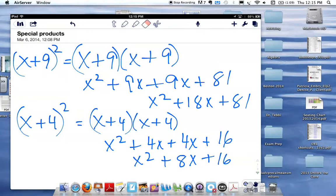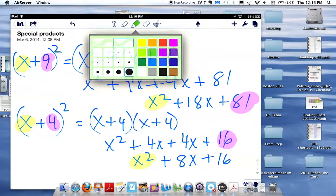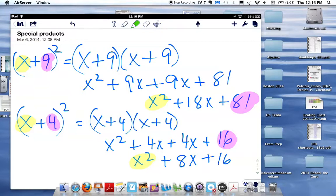We could go on with some other problems, but I'm hoping that what you see is that the first term is the square of the first term. The last term is the square of the last term. And the middle term is the product of the two terms doubled. If I multiply x and 9, I get 9x, and if I double it, I get 18. If I multiply x and 4, I get 4x, and if I double that, I get 8.